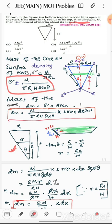Value of sigma we have already calculated. Then area, if the area of the element must be dA then dA will be 2 pi r into dL.